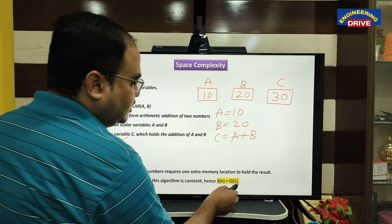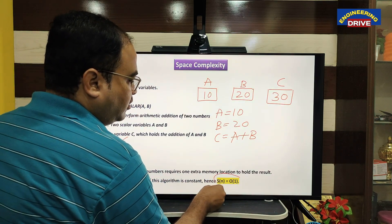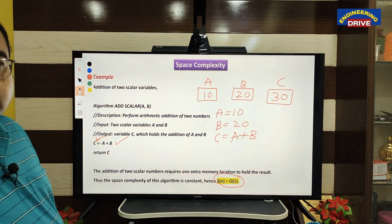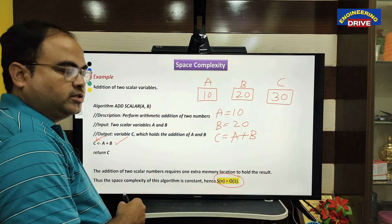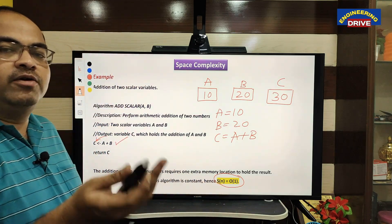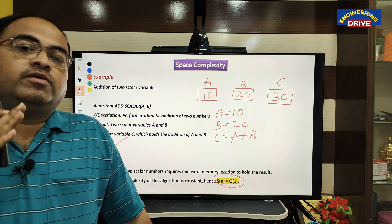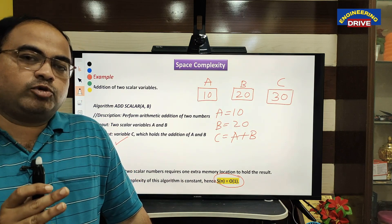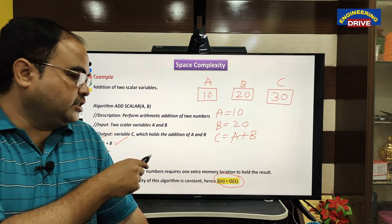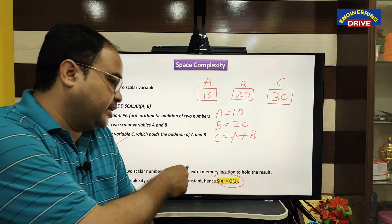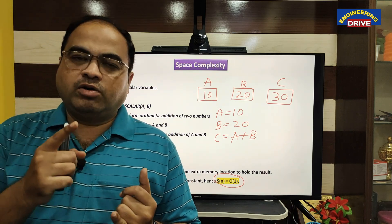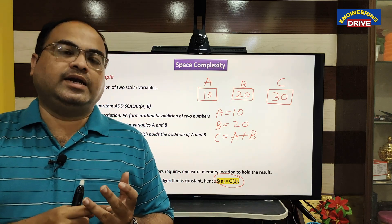The space complexity of this algorithm is S(n) = O(1). Here O(1) represents constant space. S represents space complexity — just as in the previous video we used T to represent time complexity, here we use S for space complexity.